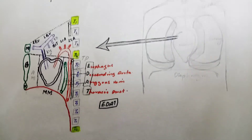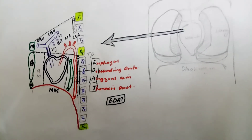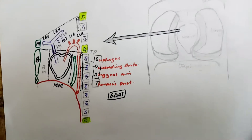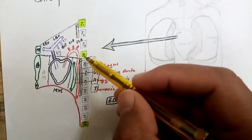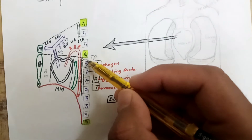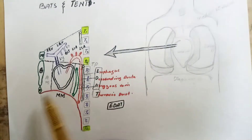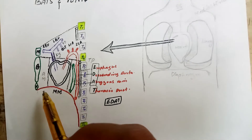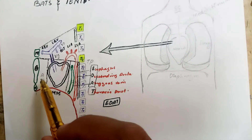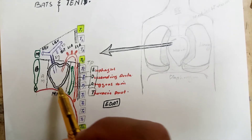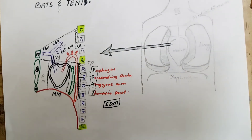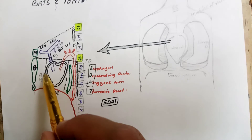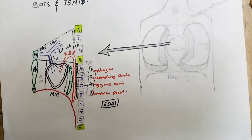The inferior mediastinum is bounded anteriorly by the body of the sternum and xiphoid process, and posteriorly bounded by T5 up to T12. The inferior mediastinum is further divided into three parts: the anterior mediastinum, the middle mediastinum, and the posterior mediastinum.